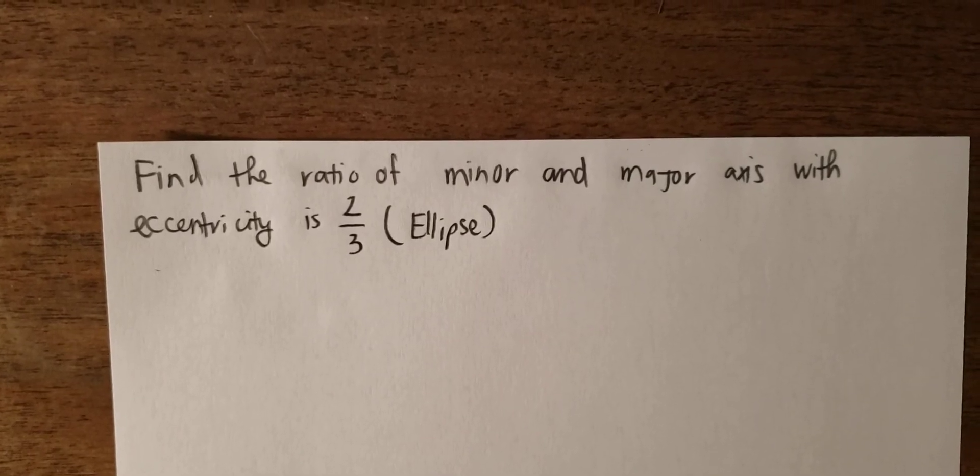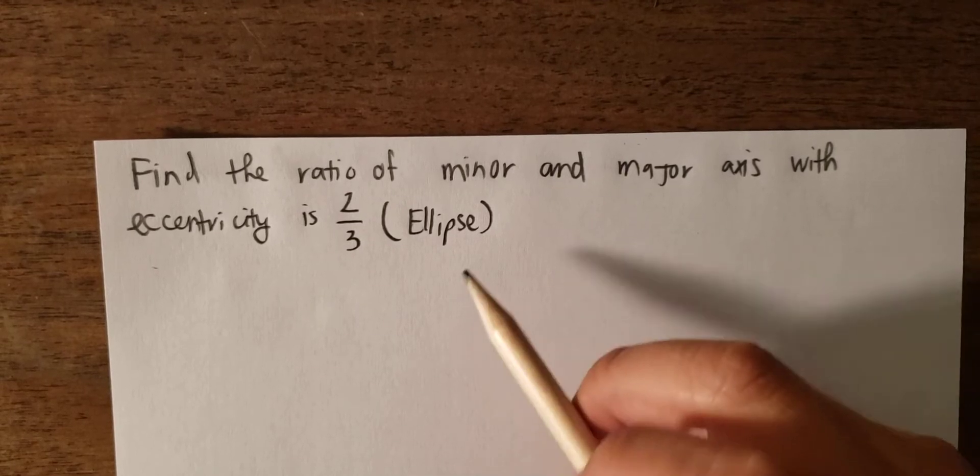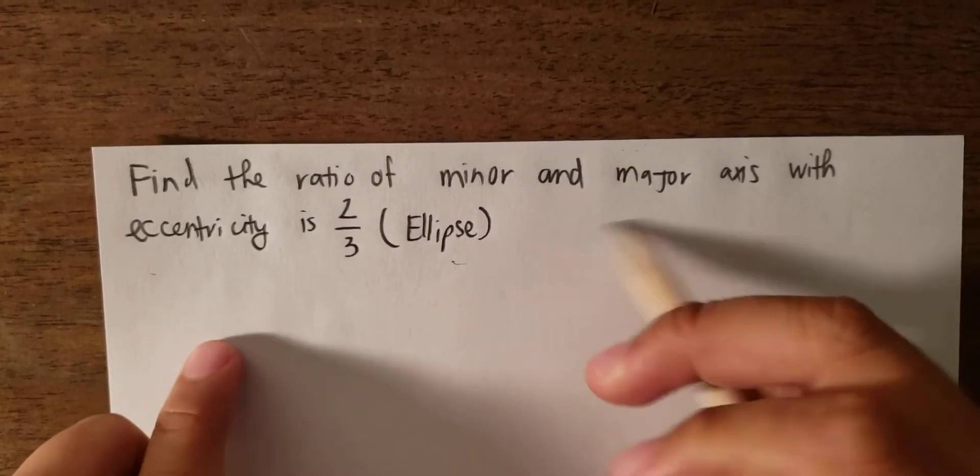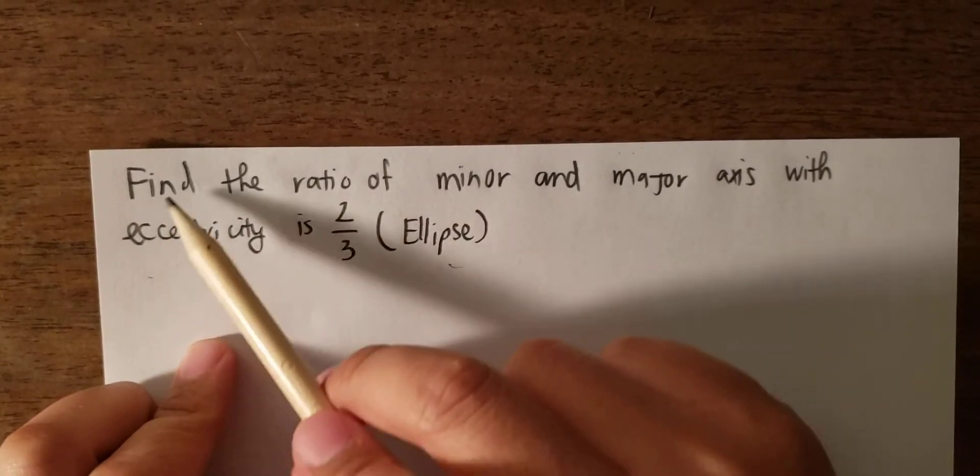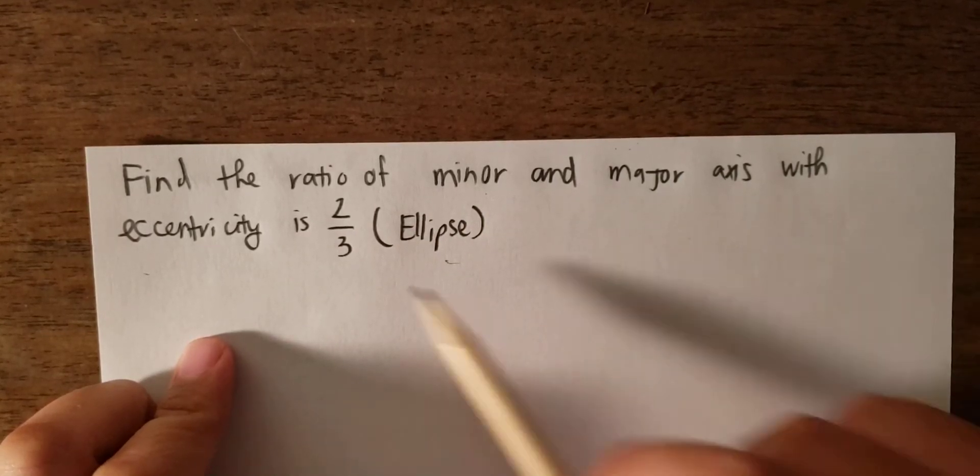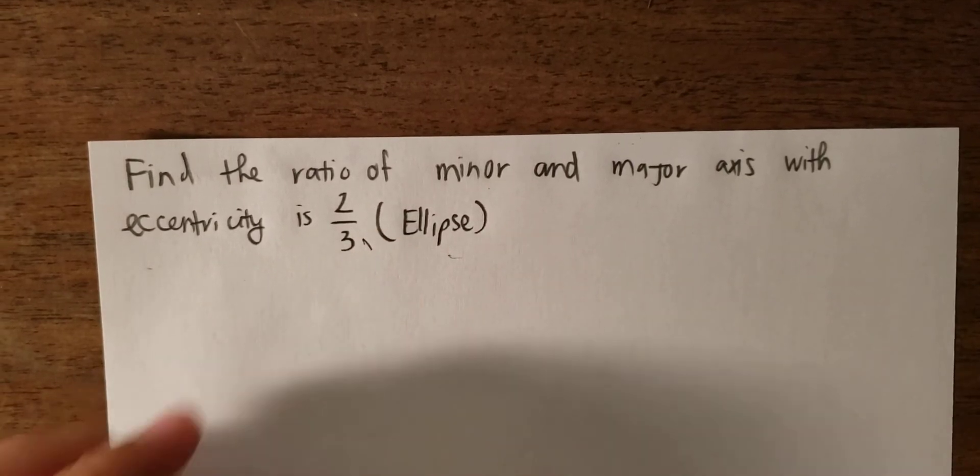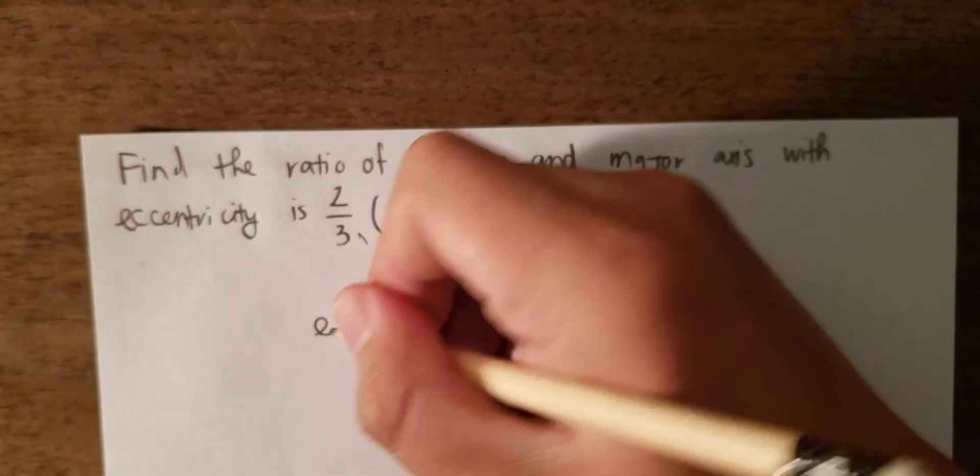Hello everybody, so today I will do the calculus. The topic today is about ellipse, so this is the question: find the ratio of minor and major axis with eccentricity is 2 over 3.